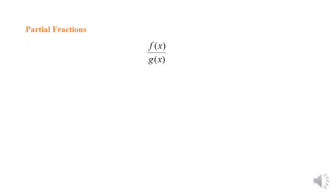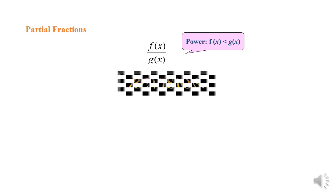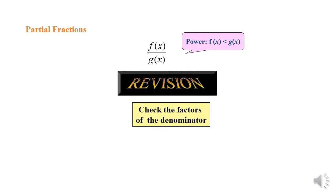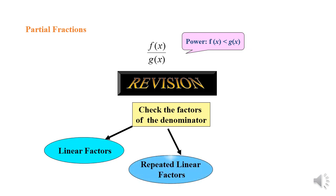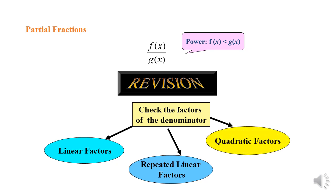Let's do some revision for partial fractions. We consider f(x) over g(x) where the power of f(x) is less than g(x). There are three types of factors of the denominator: the first is linear factors, the second is repeated linear factors, and the last one is quadratic factors.